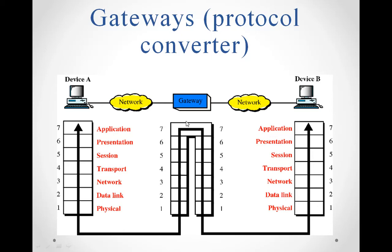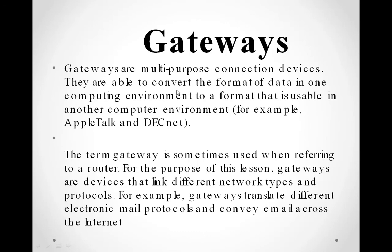For example, if your computer system has a Windows operating system and the remote computer has Ubuntu, or it could be a smartphone with a different operating system, the gateway will convert the source message into the form accepted by the destination device. It provides translation for all seven layer features of the OSI model.